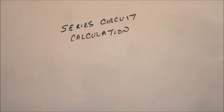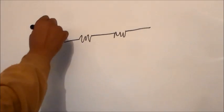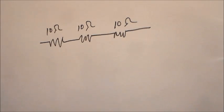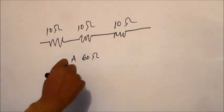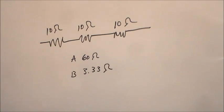Good afternoon, ladies and gentlemen. Welcome to our series circuit calculation video. We're going to work with a conductor wire with three resistors: a 10 ohm resistor, a 10 ohm resistor, and a 10 ohm resistor. The question asks: what will be the equivalent resistance in this given circuit? Option A is 60 ohms, option B is 3.33 ohms, and option C is 30 ohms.